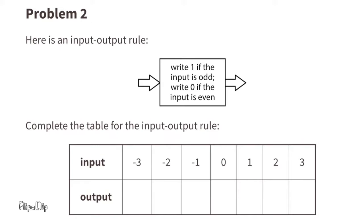Problem number two. Here is an input-output rule: write one if the input is odd, write zero if the input is even. Complete the table for the input-output rule. When the input is negative three, that's odd, so we're going to write one for the output.